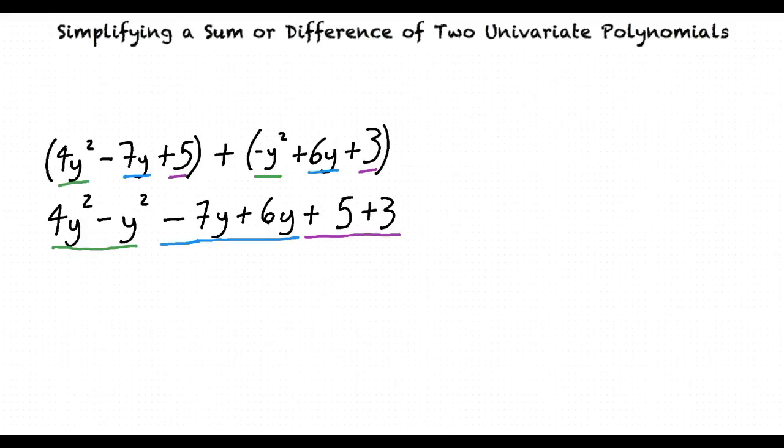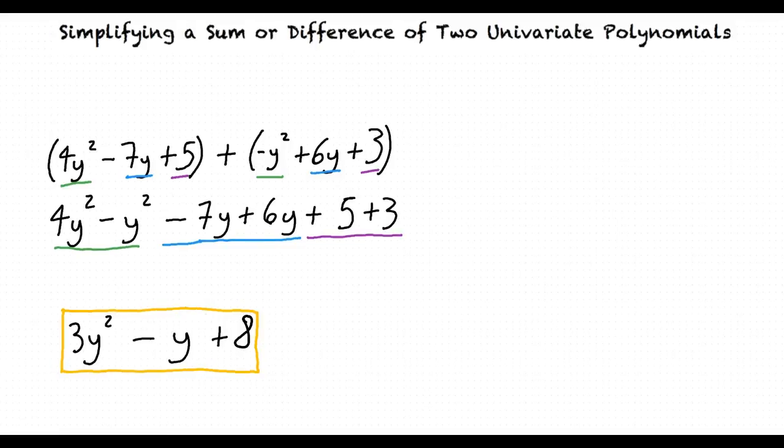4y squared combines with negative y squared, negative 7y combines with 6y, and 5 combines with 3. Add these terms together to result in an answer of 3y squared minus y plus 8. That makes sense, but how do I subtract the polynomials?